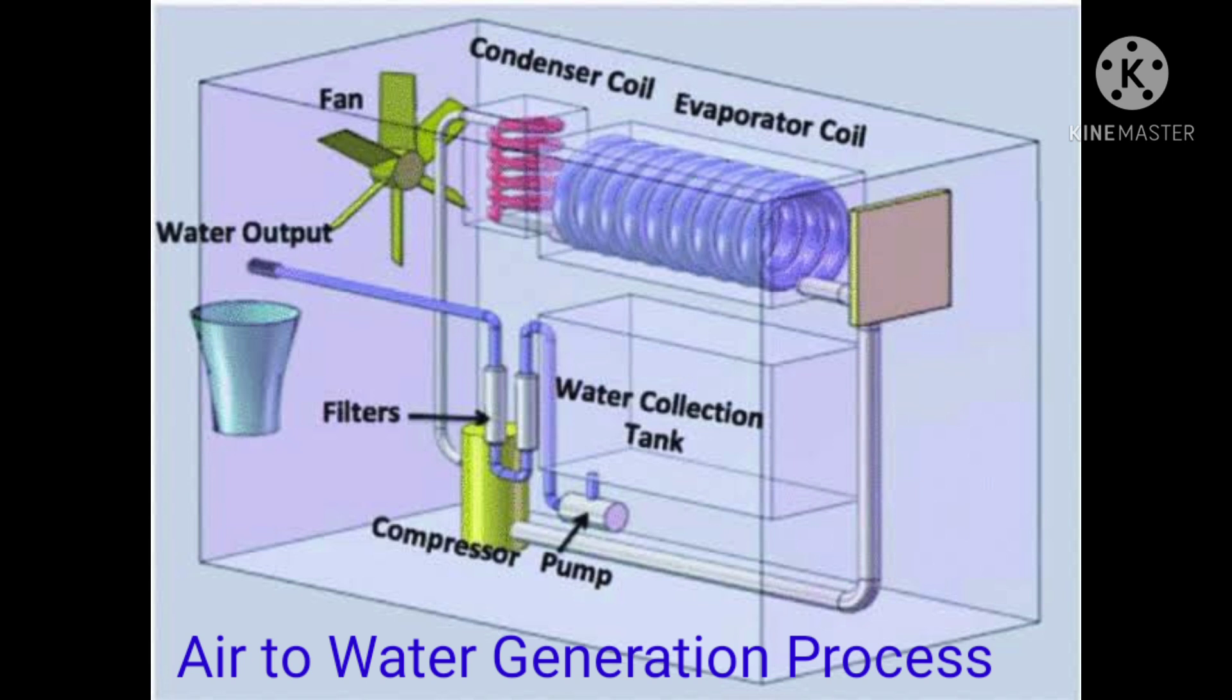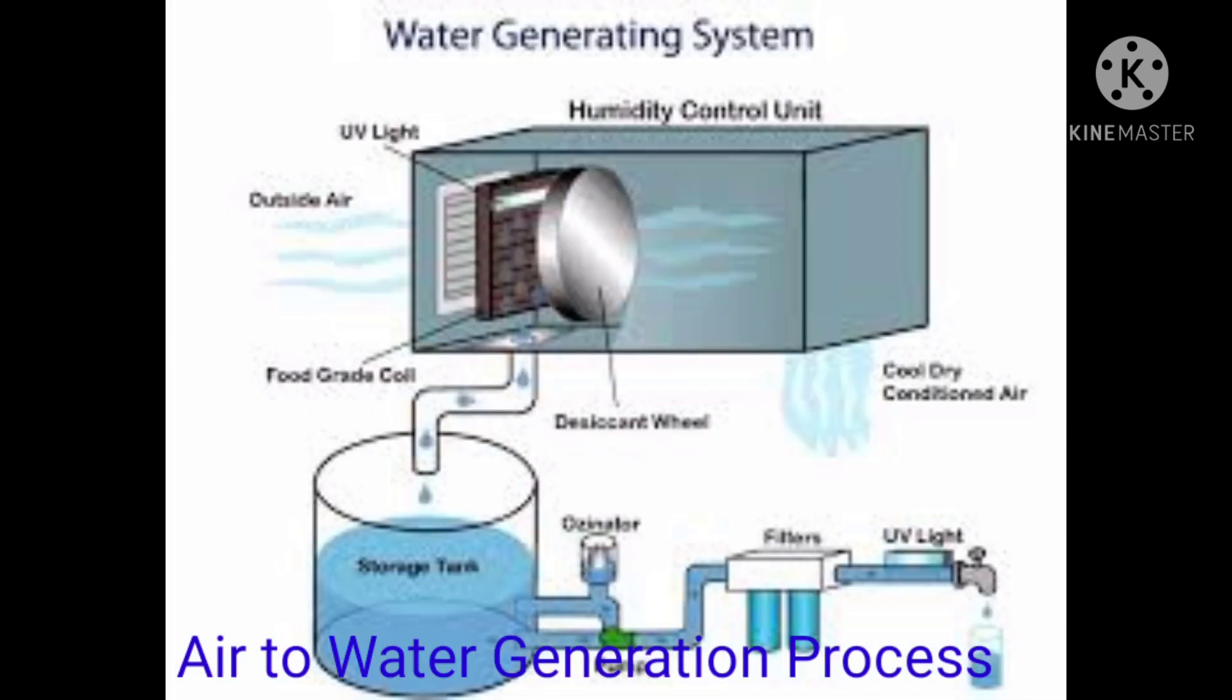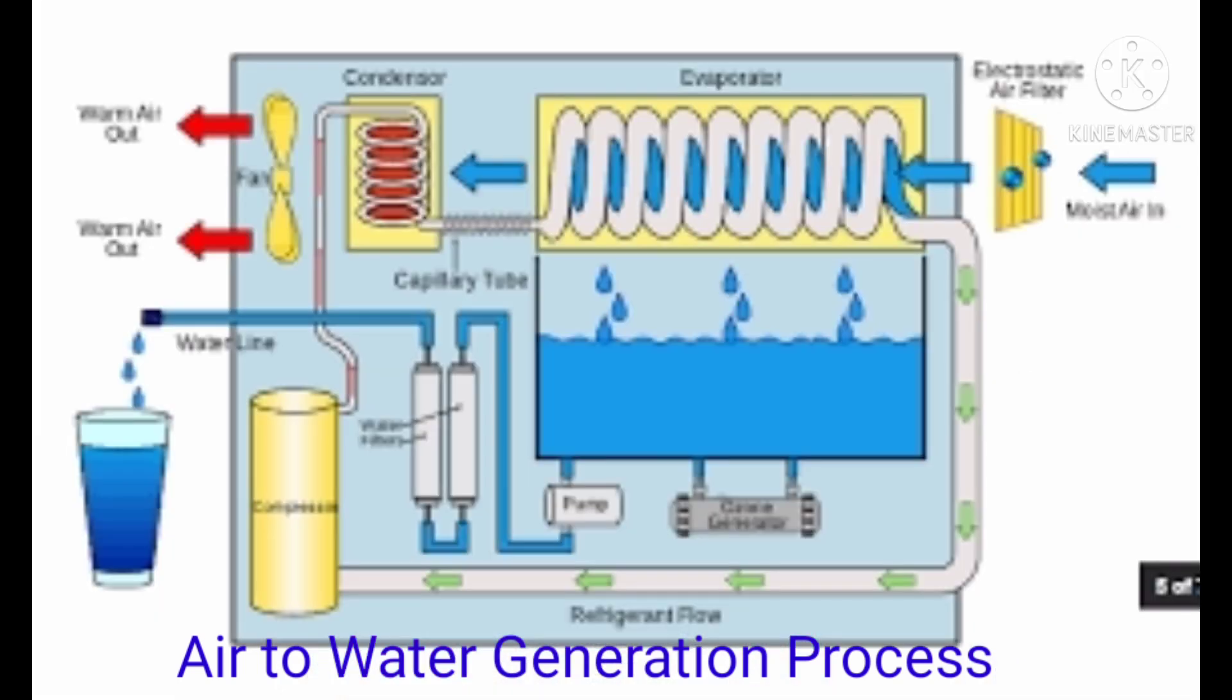Now, how is this process done? Air is sucked into a machine through an air filter and is cooled to the dew point temperature, where water vapor condenses into moisture. The water is then filtered through charcoal, treated with ultraviolet light, and nutrient minerals are added.